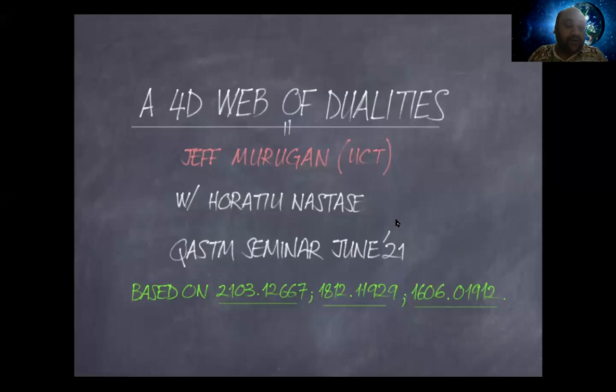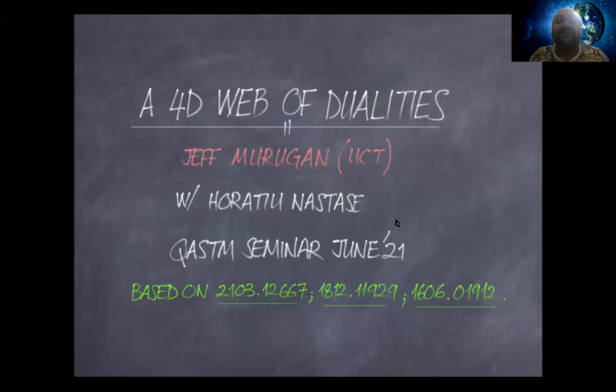Hi everyone. Today our speaker is Professor Jeff Morgan from the University of Cape Town. He's going to speak about a 4D web of dualities. This is the 86th QSTM seminar in the series, and we're very hopeful that we can learn a lot from Jeff's talk. Thank you Jeff for agreeing to give this talk.